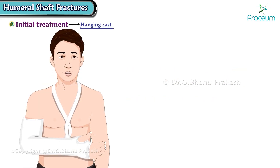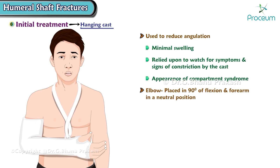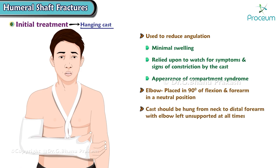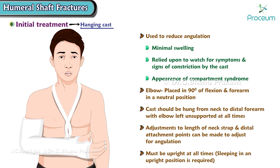The hanging cast can be used to reduce angulation in cases with minimal swelling when the patient can be relied upon to watch for signs of constriction or compartment syndrome. The elbow is placed in 90 degrees of flexion and the forearm in a neutral position. The cast is hung from the neck to the distal forearm with the elbow left unsupported at all times. Adjustments to the neck strap and distal attachment points can be made to correct angulation. The patient must remain upright at all times, including sleeping in an upright position.